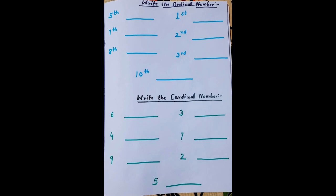As already explained, cardinal numbers are the numbers we use normally for counting. Some numbers are given here and the kid needs to write the number names of those particular numbers and complete the worksheet.